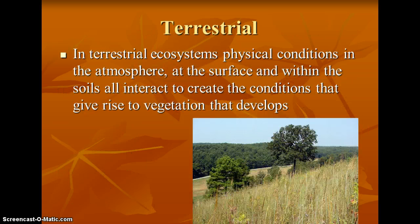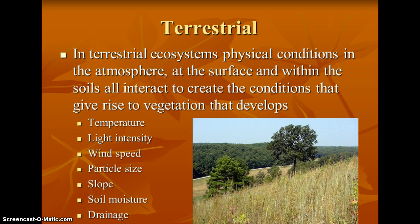In terrestrial ecosystems, the physical conditions are those that give rise to the vegetation. Vegetation produces the energy that goes through the rest of the food chain. We're looking at physical characteristics of the atmosphere, of the surface, and what is within the soil. Some of those are temperature, light intensity, wind speed, particle size, slope, soil moisture, and drainage. We'll talk about how to measure some of these factors.